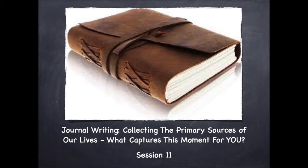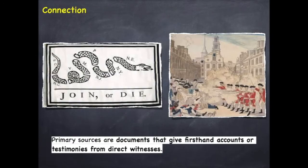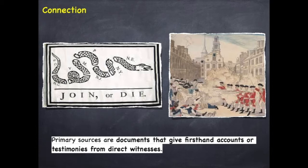Let's take a closer look at collecting the primary sources around us that capture this moment. Here's a reminder of what a primary source could be. When we studied about the American Revolution, you saw Benjamin Franklin's political cartoon, Join or Die. This is a primary source because someone who was around during this time made it to represent what he was thinking about. Also, to the right, there's a picture of the Boston Massacre. This is a primary source because Paul Revere, a person around at that time, made this during the time of the Boston Massacre to show how evil the Redcoats were — thinking about his perspective during this time, too.